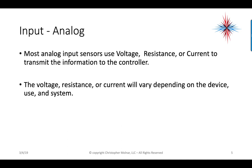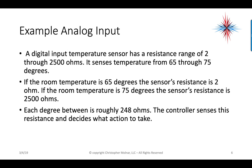The voltage, resistance, or current will vary depending on the device, the use, and the system. A basic example of an analog input would be a temperature sensor with a resistance of 2 through 2,500 ohms that senses temperatures from 65 through 75 degrees. If the room temperature is 65 degrees, the sensor's resistance is 2 ohms. If the room temperature is 75 degrees, the sensor's resistance is 2,500 ohms. Each degree between these two min and max temperatures is roughly 248 ohms. The controller senses this resistance and decides what action to take — we're dealing with ranges of values.